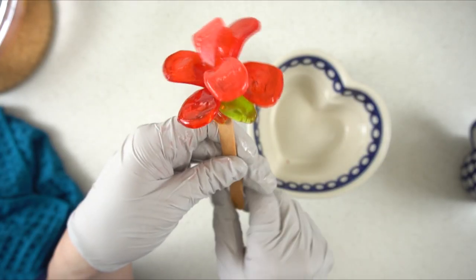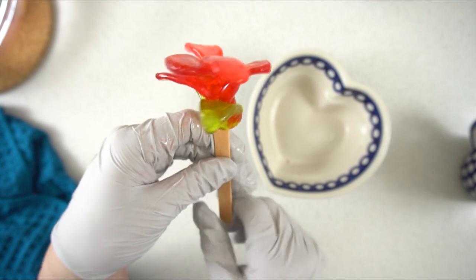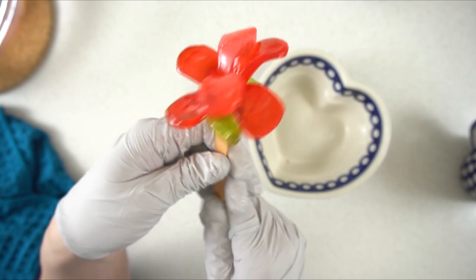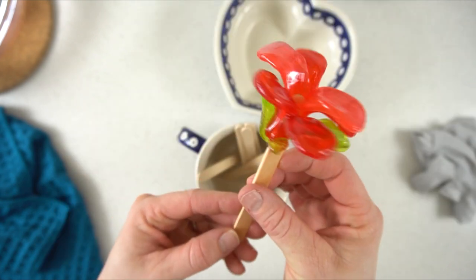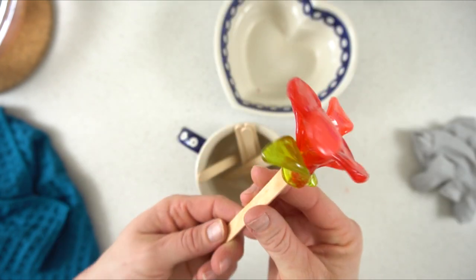So now my challenge for you is to try to make a different flower using this. Make it so the petals maybe curve in or make it using different colors. And there you have your beautiful Jolly Rancher flower.